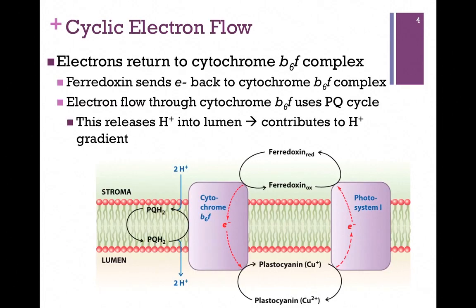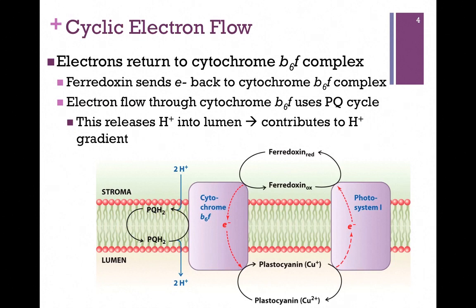Let's compare that to cyclic electron flow. The same series of events is going to occur down to Photosystem 1, where it transfers the electron to ferridoxin. Then something changes: rather than ferridoxin passing that electron or electrons on to NADP+, it returns it to Cytochrome B6F. Cytochrome B6F passes the electron again on to Plastocyanin, which returns it to Photosystem 1. So the same electron essentially cycles through Photosystem 1 and Cytochrome B6F through the carriers ferridoxin and Plastocyanin.